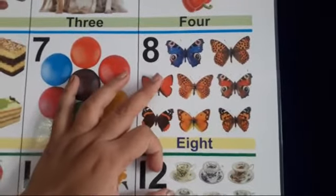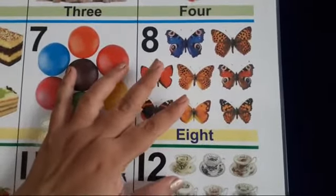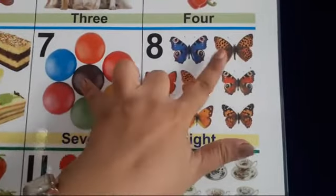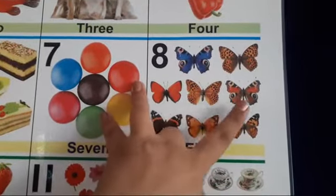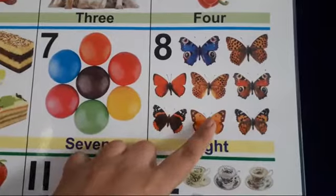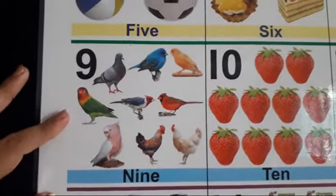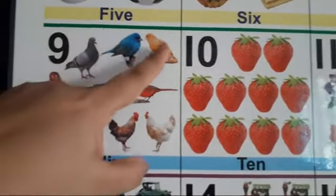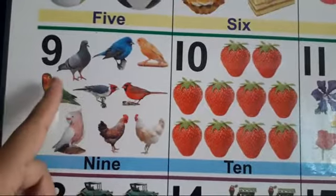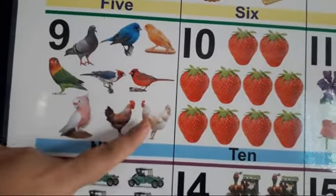Which number? 8. And which picture is this? Butterfly. Count. 1, 2, 3, 4, 5, 6, 7, 8. Number 9. Birds. Yes. Count. 1, 2, 3, 4, 5, 6, 7, 8, 9.